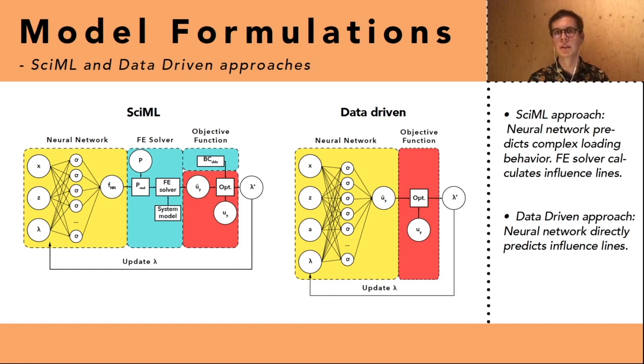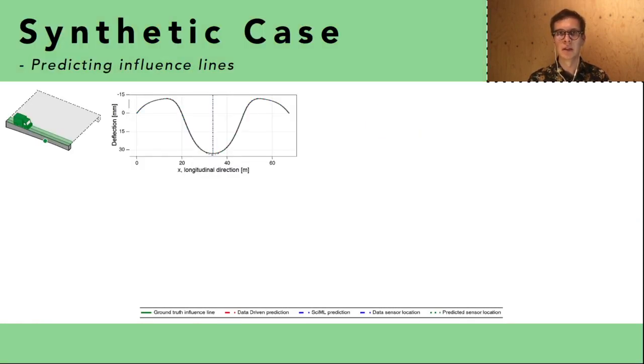For the data driven model we only use a neural network in order to make predictions which we then together with the data use to fit the model. And some results. So we want to fit the data in the form of one influence line. This is possible to do with both models accurately.